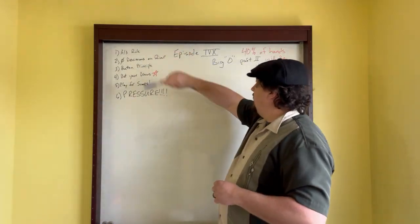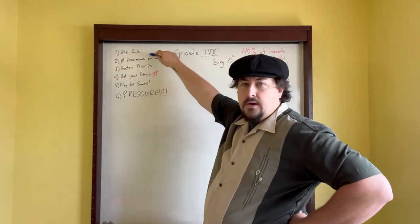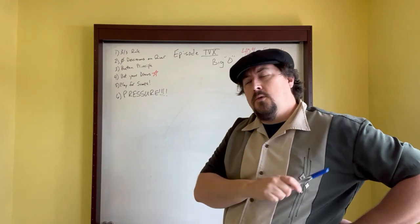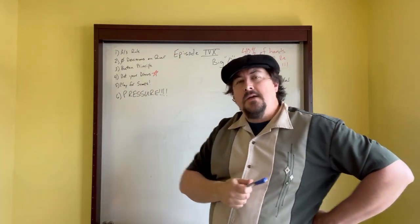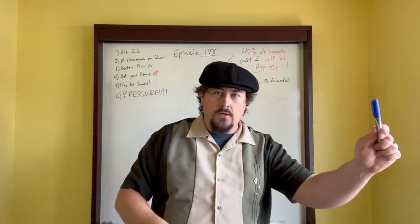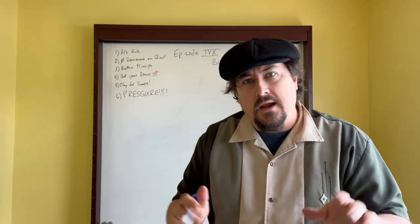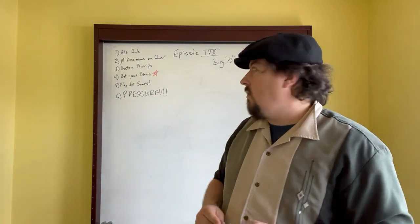As you know, in Big O on the first part, we applied some principles. The first principle, real quick recap, is the 3-3 rule. I cannot stress that enough. If you are playing three cards to Broadway and three cards to a wheel, you're going to do good in Big O.